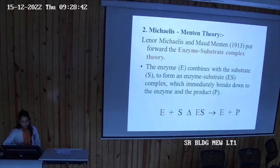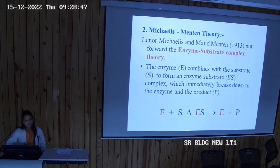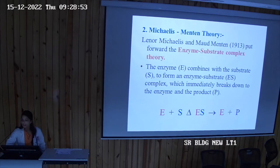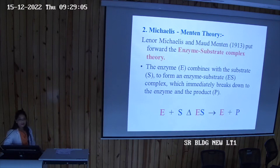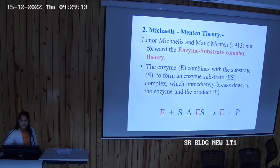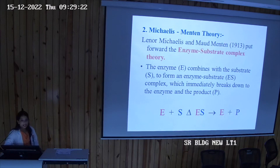Michaelis and Menten put forward the enzyme-substrate complex theory: the enzyme combines with the substrate to form an enzyme-substrate (ES) complex, which then breaks down to release the enzyme and form product. E + S → ES → E + P. This is known as the Michaelis-Menten theory.